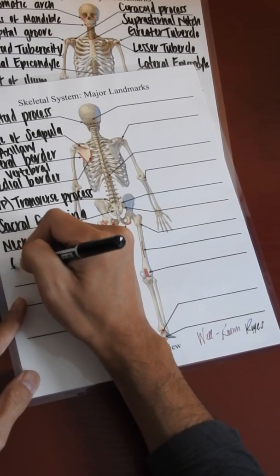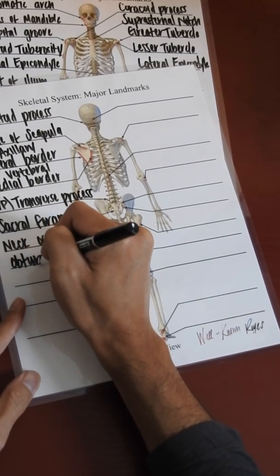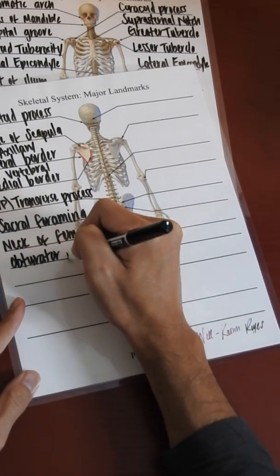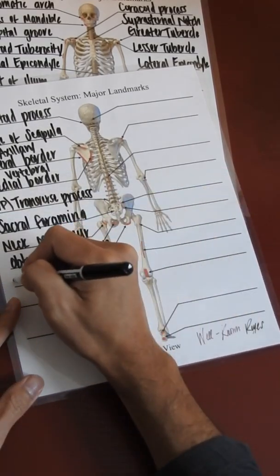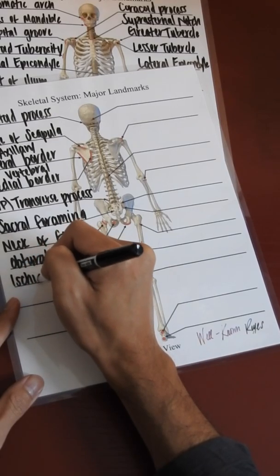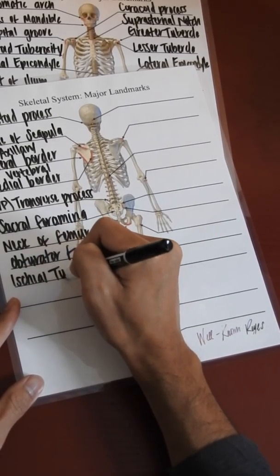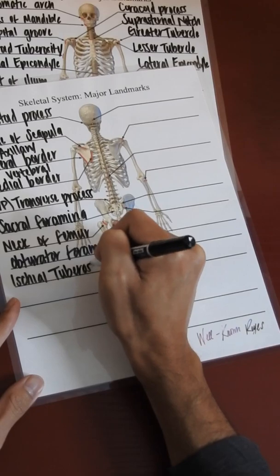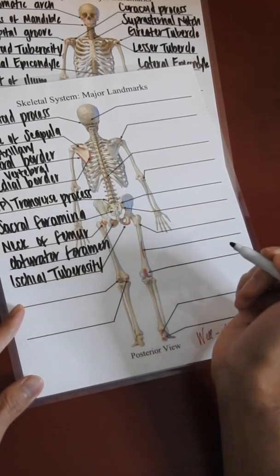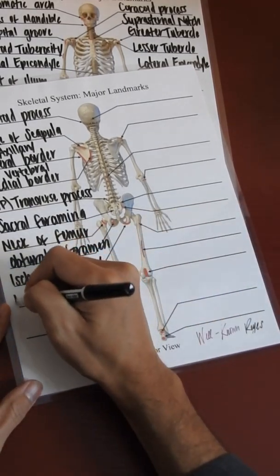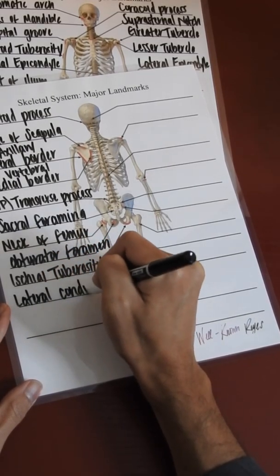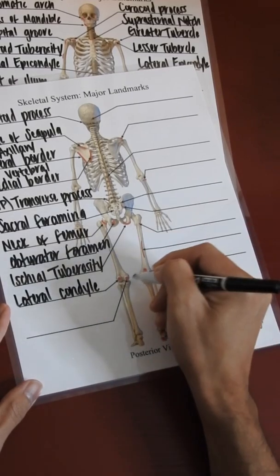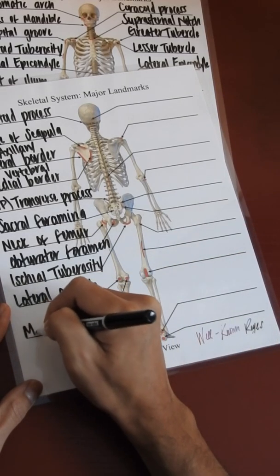We have the obturator foramen, we have the ischial tuberosity, and we have the lateral condyle of the femur.